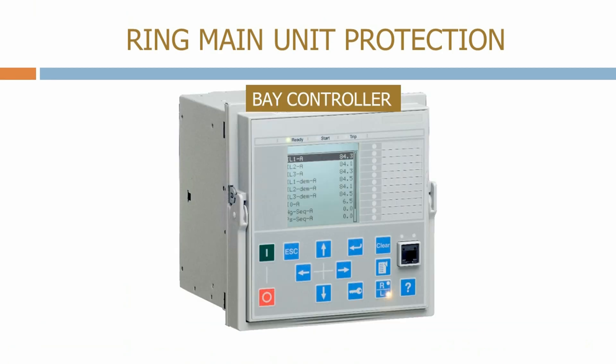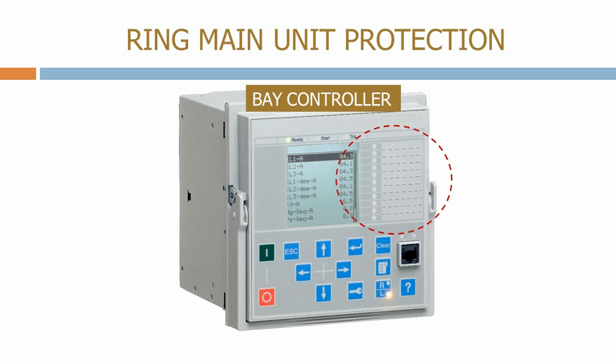As RMUs are simple in nature, they can be protected by a single device called a bay controller. These are supplied from the manufacturer with their own software package, which allows the unit to be configured via the communication port using any normal laptop or PC. The unit can also be controlled from the front panel, which is normally used to check the values of the currents and voltages and see what alarms have been generated. On the right hand side of the unit we have programmable LEDs which can be set to operate when we get an alarm being generated on the RMU.